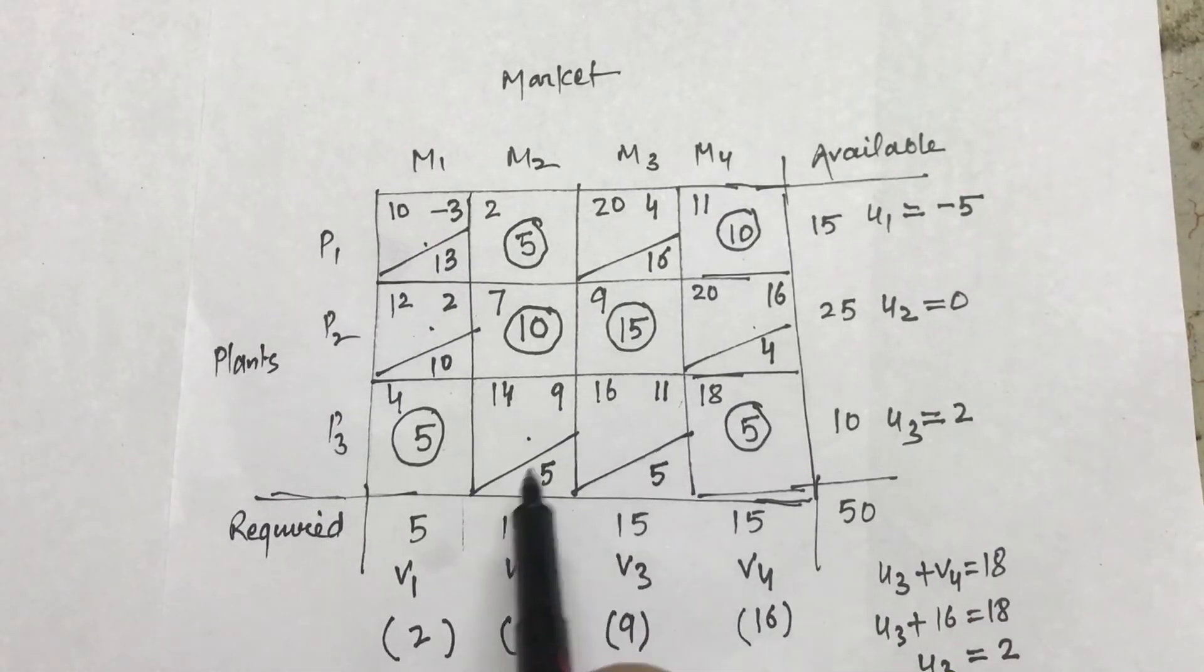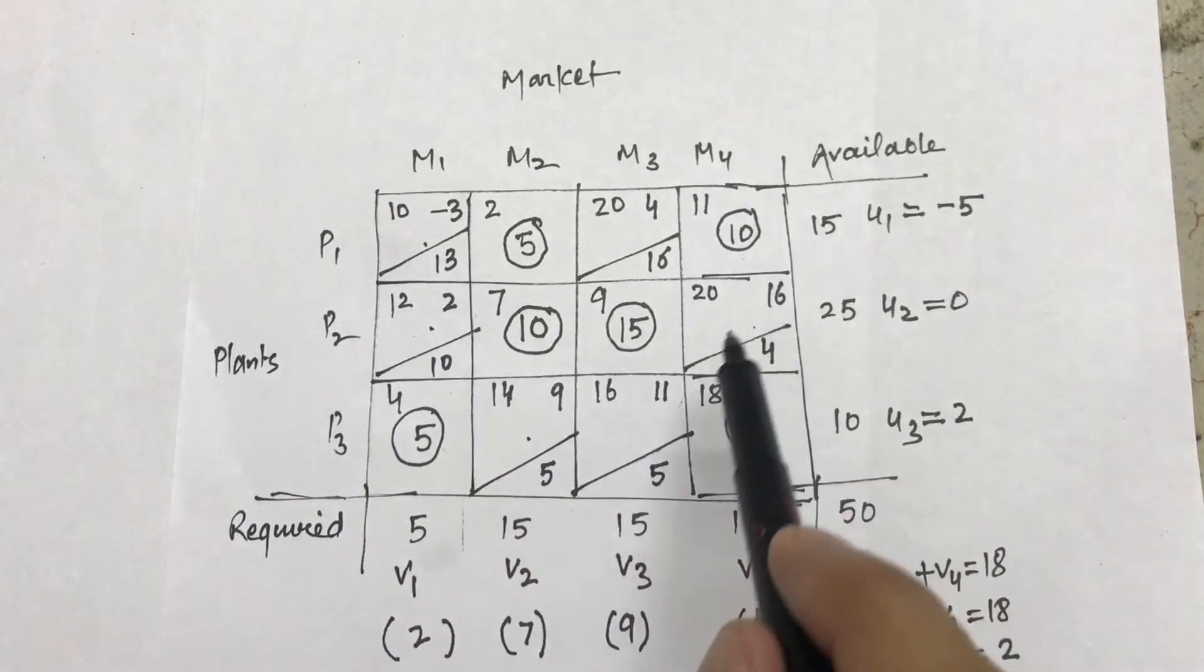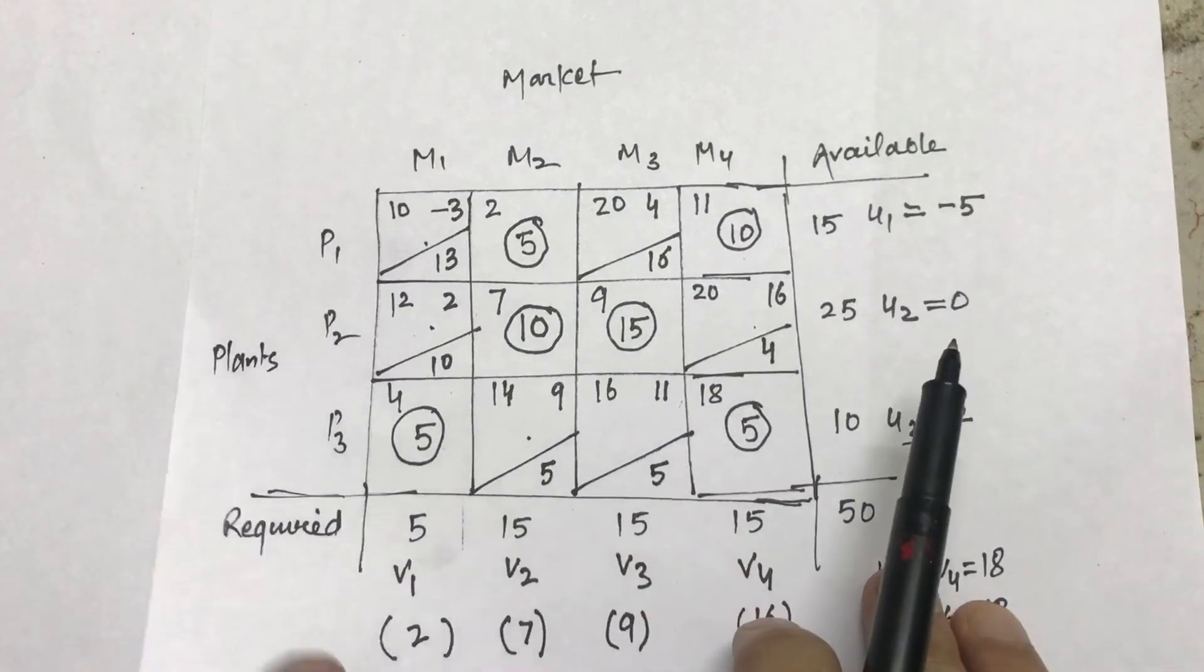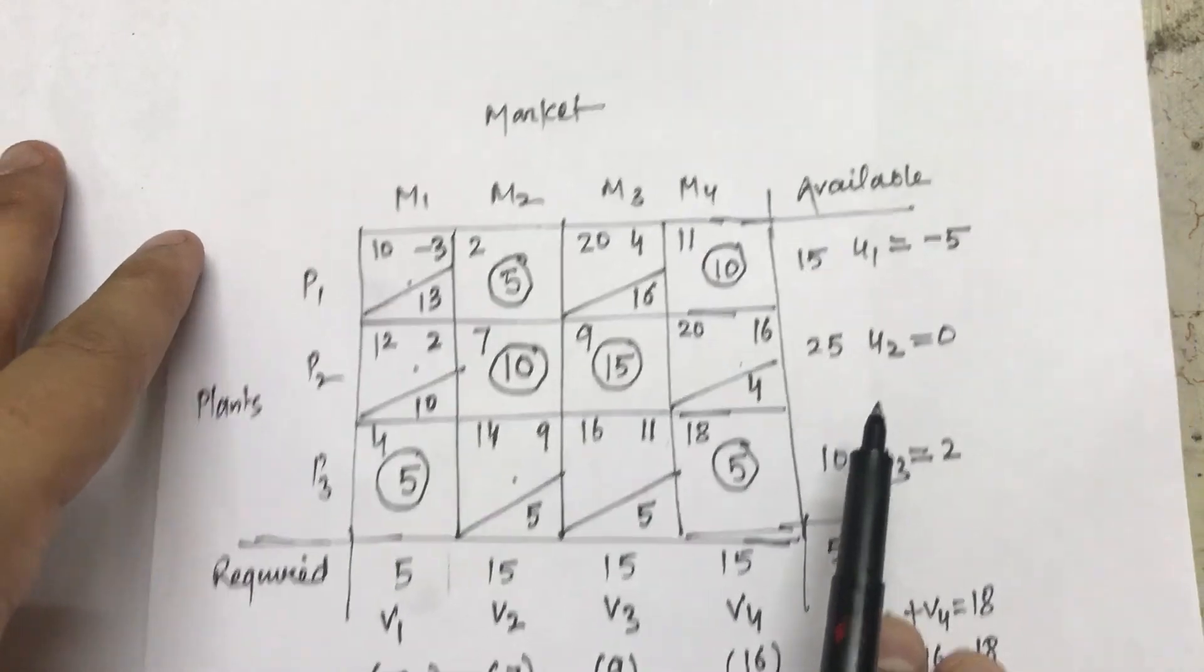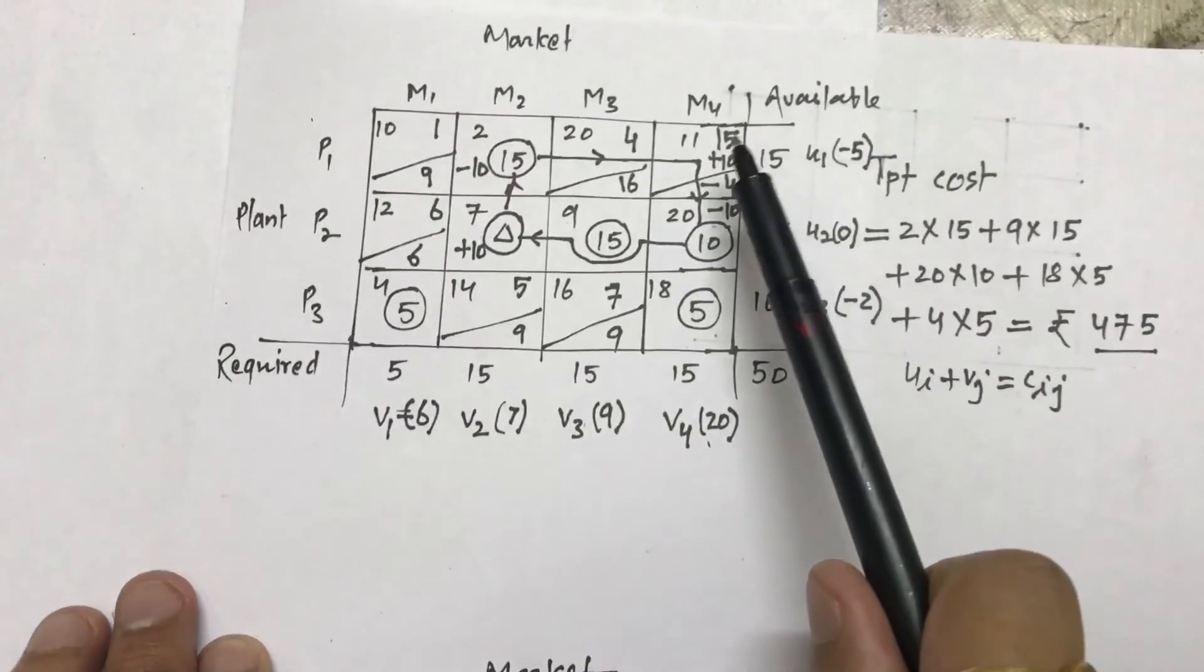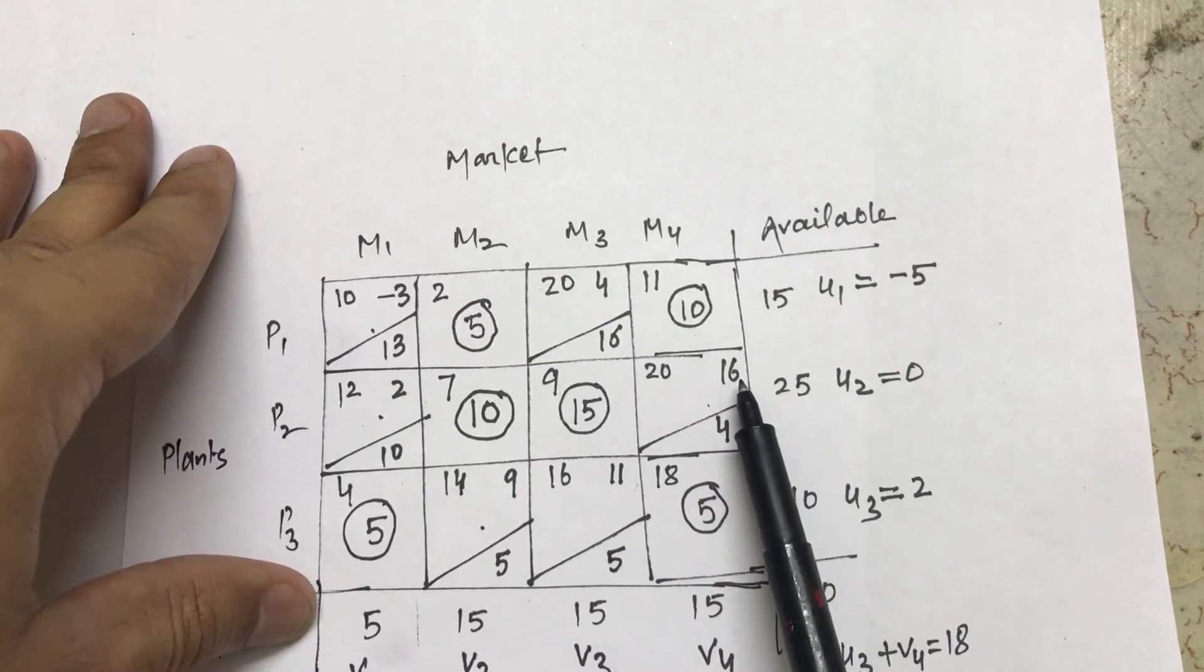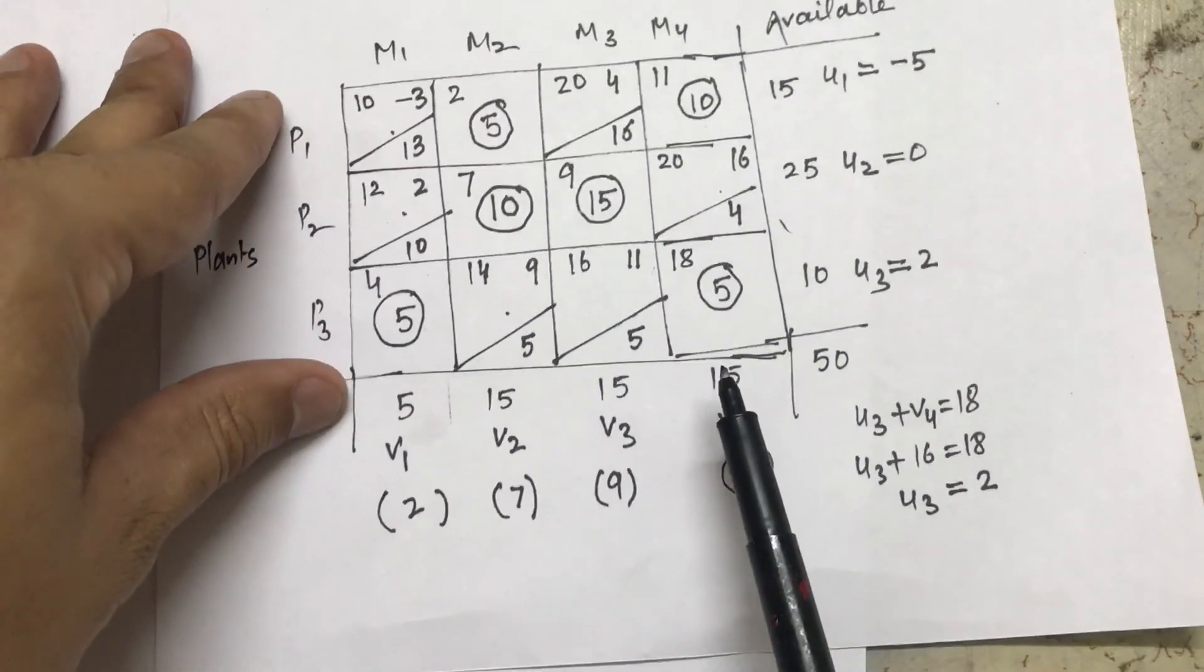Now all these values are positive or 0, so my solution is optimal. So this is my optimum solution. Now if you could see how these things can change. Since I was getting negative in this cell, this cell is allocated, so I don't have to calculate this particular value. This is also called opportunity cost.